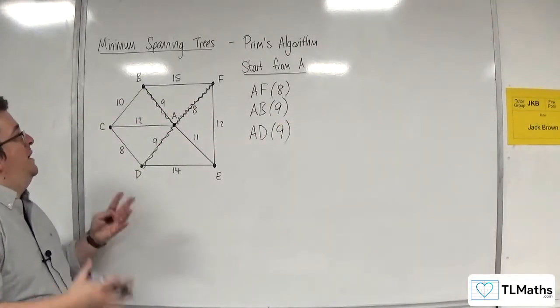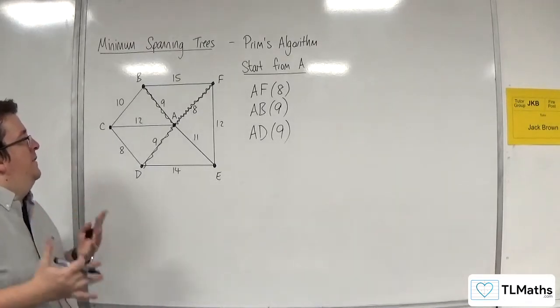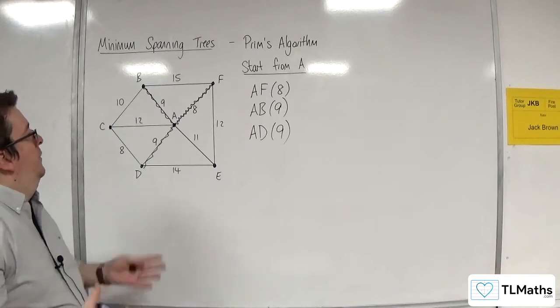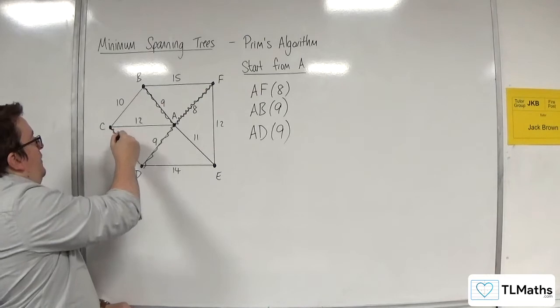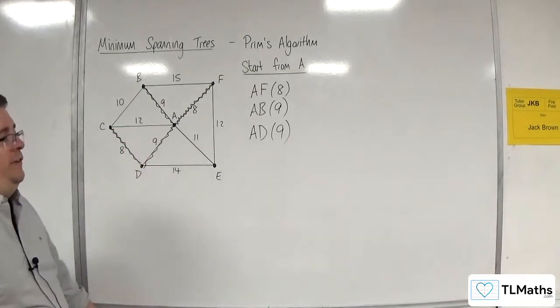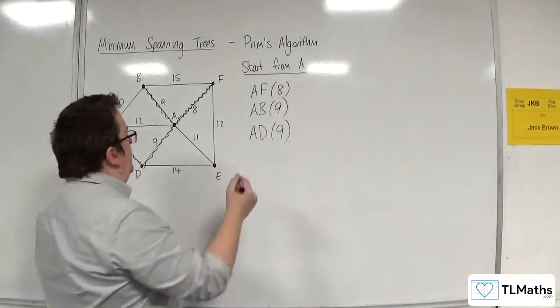I now look at all of the edges coming out of A, B, D, and F, and I pick the next shortest one. So the next shortest one is C, D. That is the next shortest edge coming out of any of the vertices that I have currently connected to the tree. So C, D is the next one.